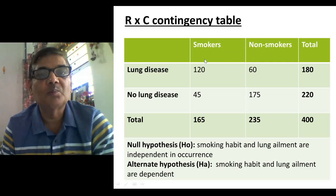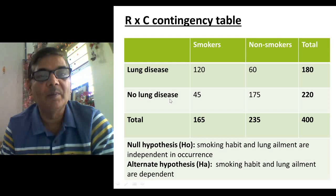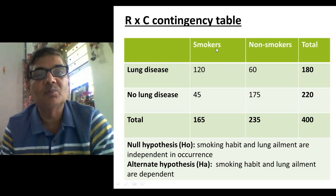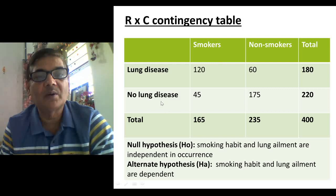There are also people who suffer from lung problems — they develop some kind of lung disease — and persons who are healthy and don't have any lung ailment. In this table, 120 persons have been observed who have developed the smoking habit and also have a lung problem. When we talk about smoking here, it means they are regular smokers, not occasional smokers. There are also smokers who don't suffer from any lung problems.